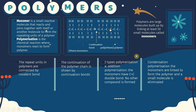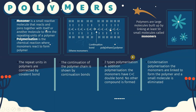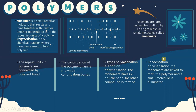There are two types of polymerization. One is called addition polymerization and the other is called condensation polymerization. In addition polymerization, the monomers have a double bond (C=C) and no other compounds are formed. In condensation polymerization, the monomers are linked together to form the polymer and a small molecule is eliminated.